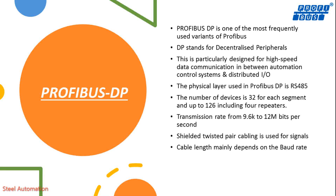The number of devices is 32 for each segment and up to 126 including four repeaters. Transmission rate ranges from 9.6 kbps to 12 Mbps. Shielded twisted pair cabling is used for signals.